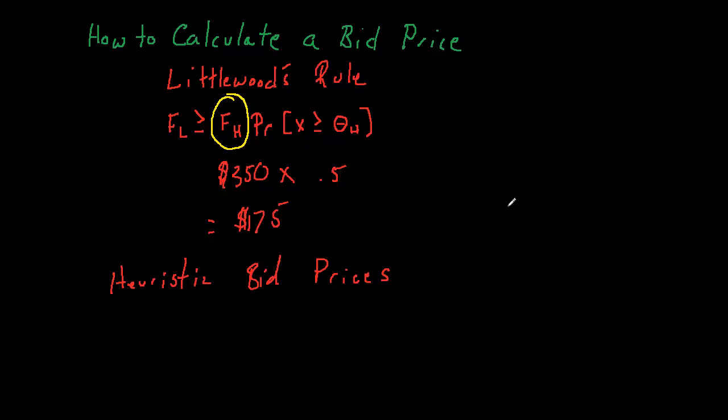Now, you could do that. Of course, if you're going to run a network optimization to calculate displacement costs for leg-level heuristic bid prices, then it calls into question whether you should just be calculating network-level bid prices to begin with.